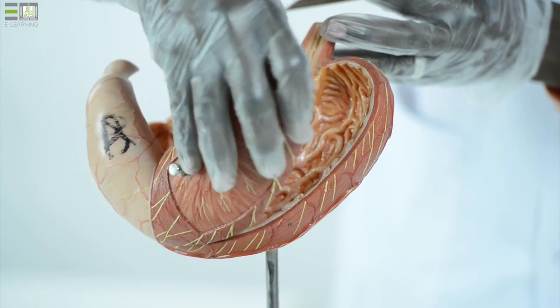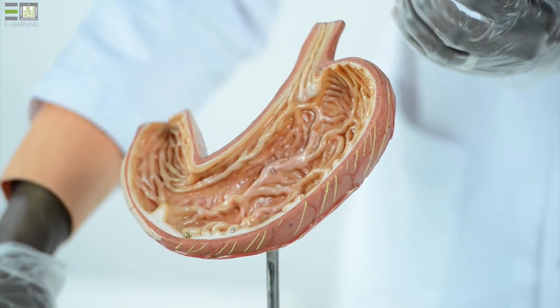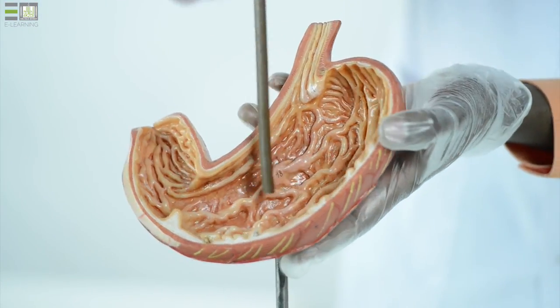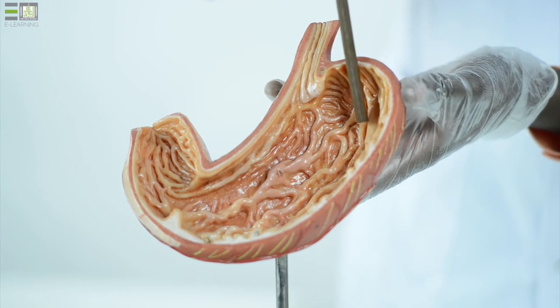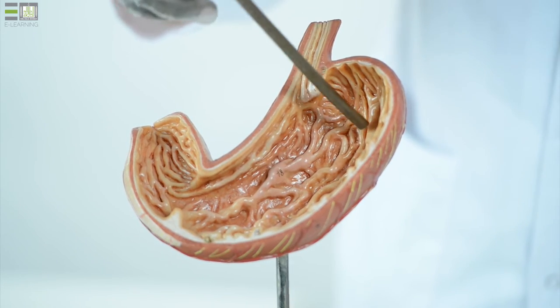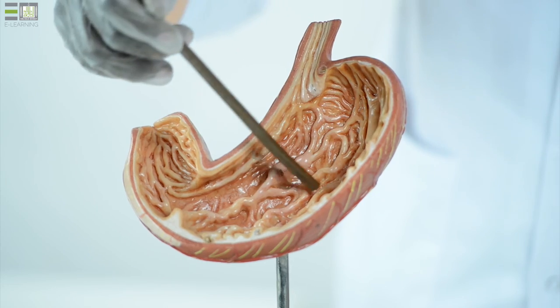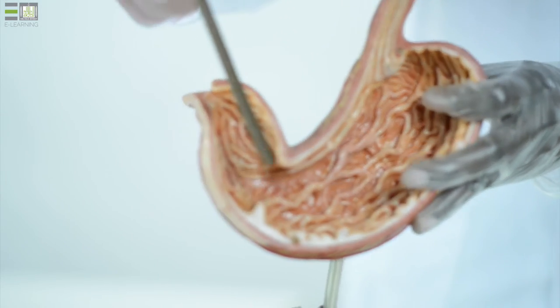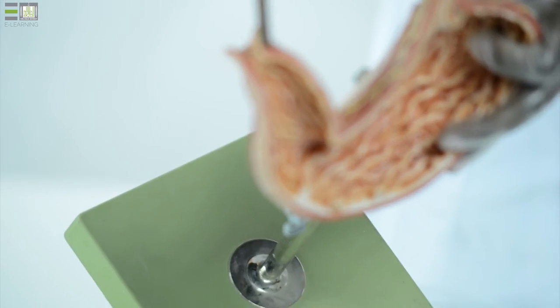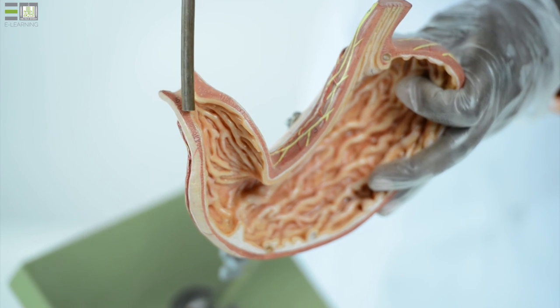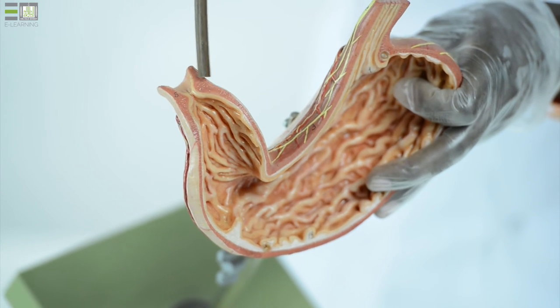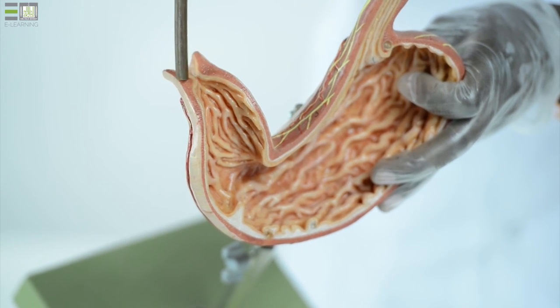If we open the stomach to look to the interior, we can see that the mucosa of the stomach is characterized by the presence of longitudinal folds called rugae. And if we look to the gastro-duodenal junction, we can see that the smooth muscle here thickened to form the pyloric sphincter.